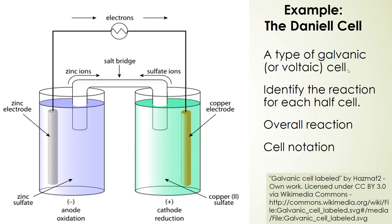These are spontaneous cells that produce a current as set up. In this example, we're going to identify the reaction for each half cell, including the chemical reaction for each half cell. We're going to look at the overall reaction, and we're going to write down the cell notation or the cell diagram for this cell.